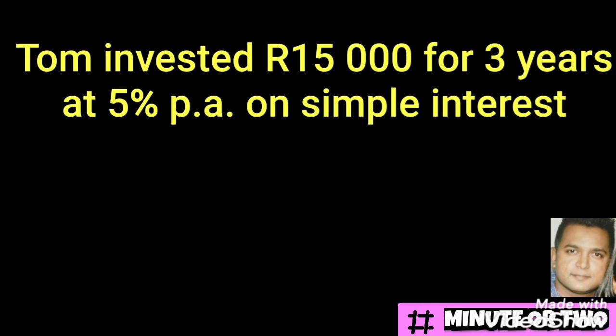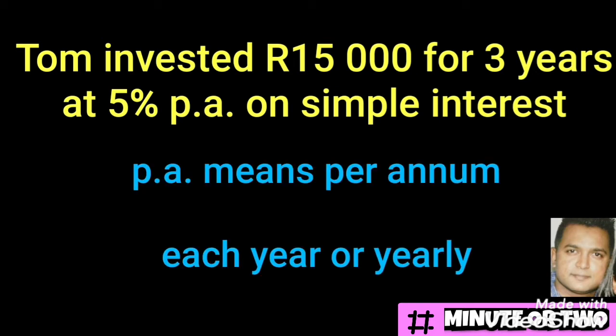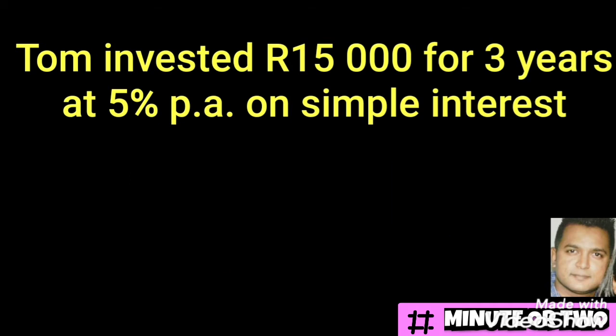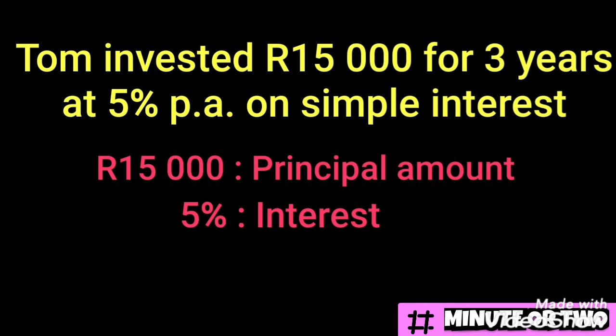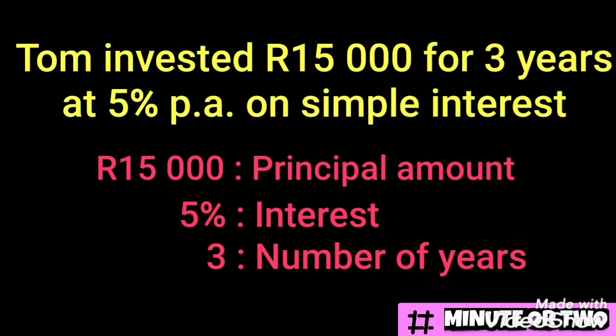Tom invested 15,000 Rand for three years at five percent per annum on simple interest. The 'PA' you see here means per annum, which basically means every year, each year, or yearly. When looking at a question of this nature, there are three things to look out for: the principal amount, the interest, and the number of years. In this example, the principal amount is 15,000, the interest is five percent per annum, and the number of years is three.